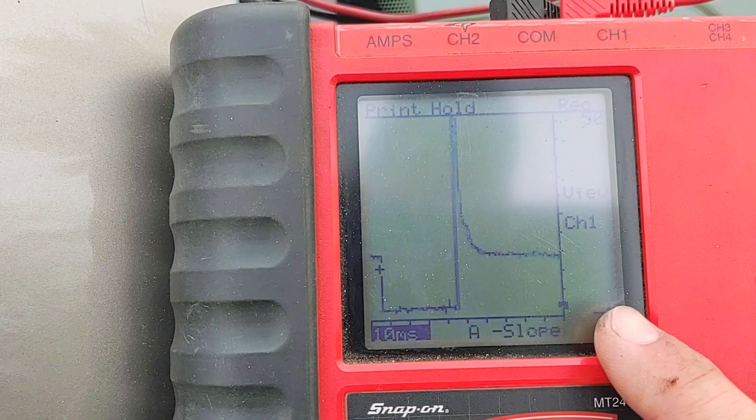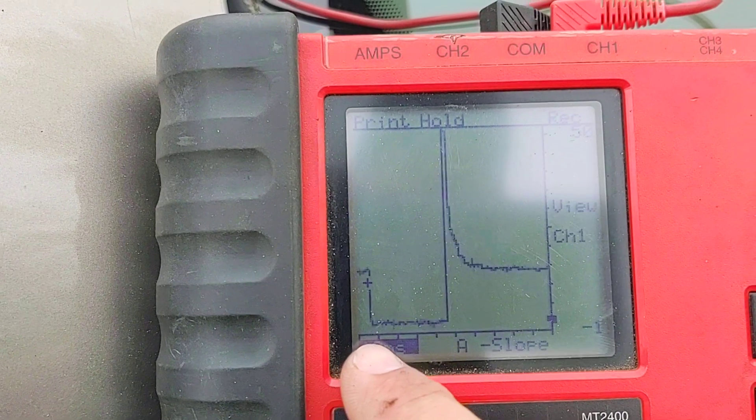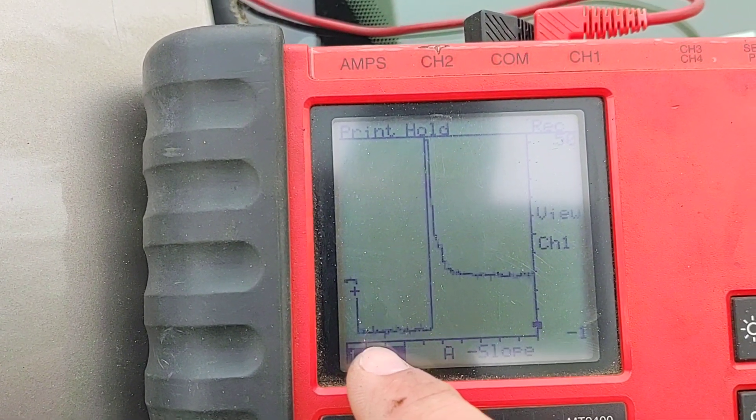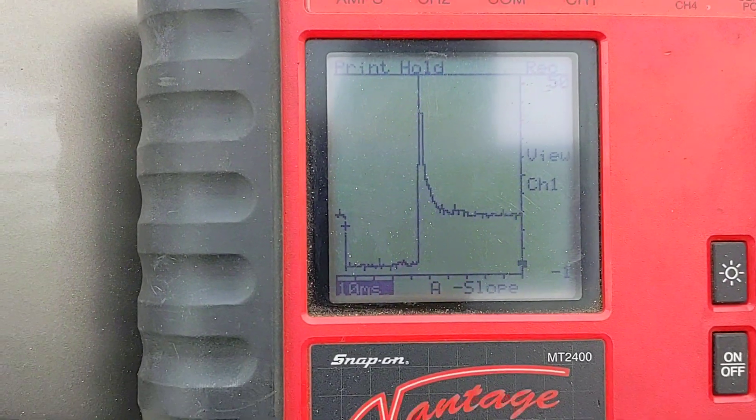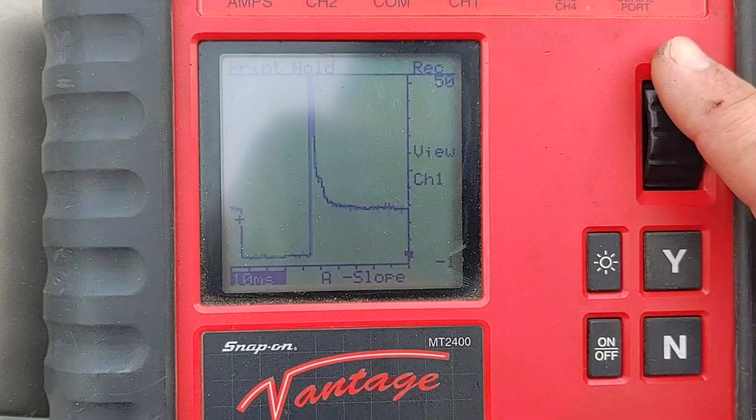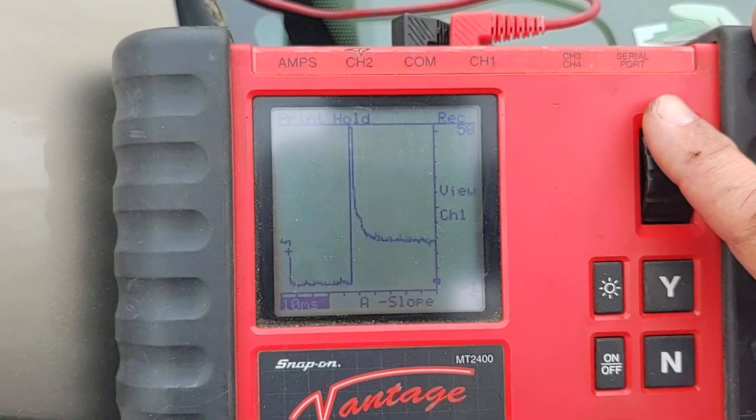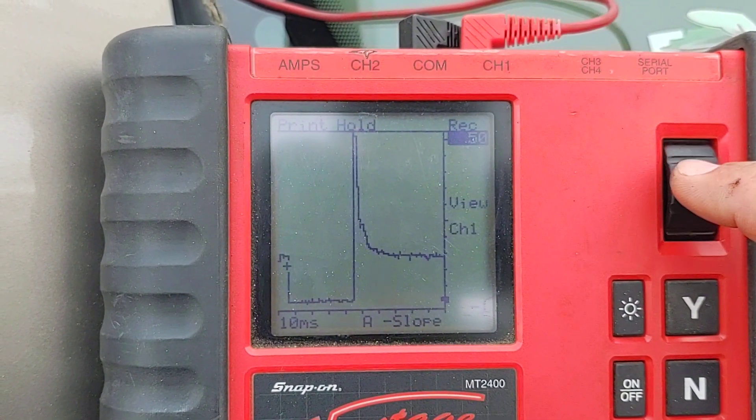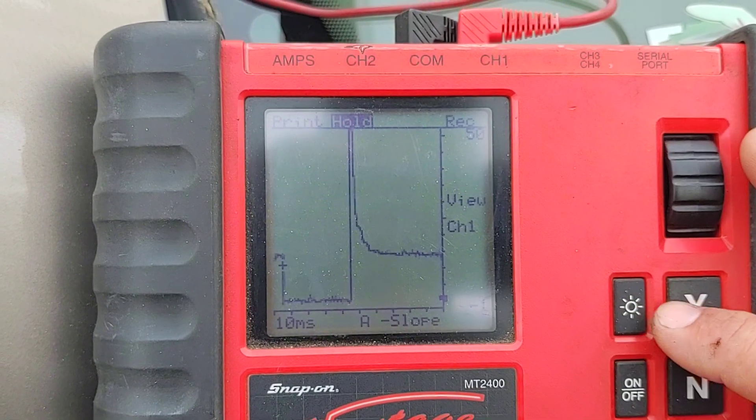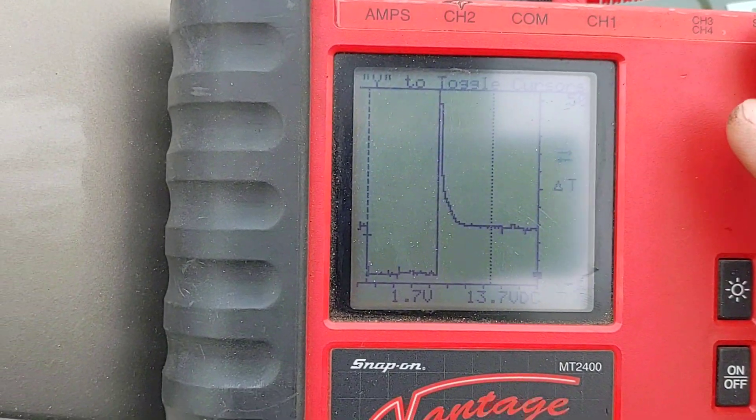So first thing I want to do, when I change the time signature here, I want to bring this back down to the 10 milliseconds. Okay, so this whole screen is worth 10 milliseconds. So just kind of a rough estimate. It looks like one, two, three and a half ish. But with this tool, we can actually freeze it and measure that. And I haven't done this in a very long time. So I actually have to remember how to do that. So we're going to scroll up here to hold.